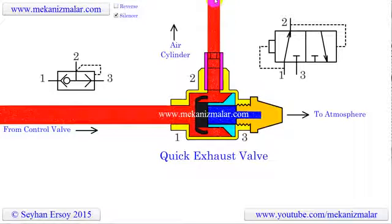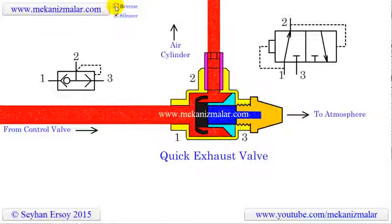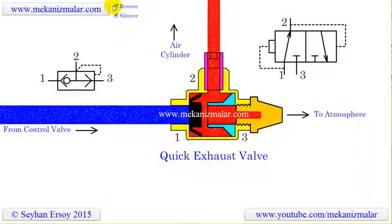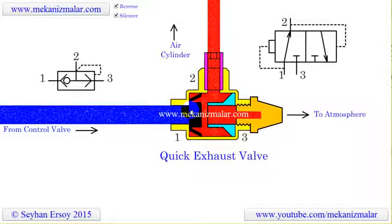When the pressure is reduced at port 1, the high pressure air inside the cylinder rushes toward port 2. This pushes the rubber spool backward and blocks the inlet port 1. The only way out for the air is port 3, which is connected to the atmosphere.